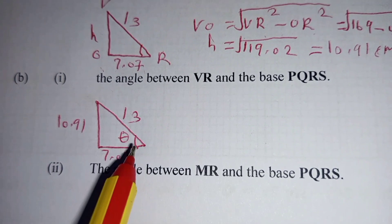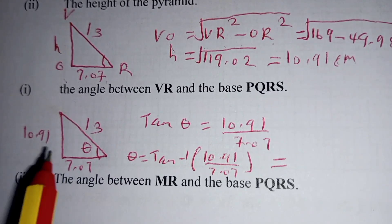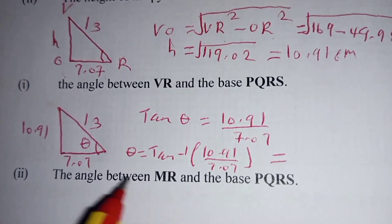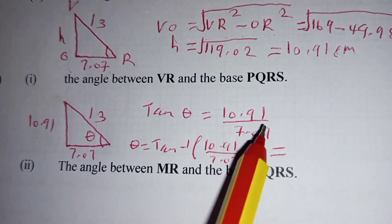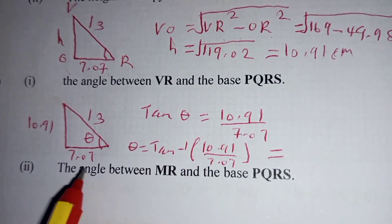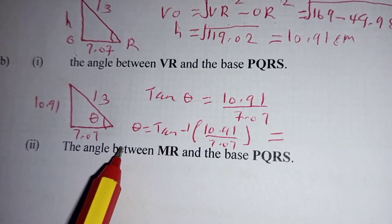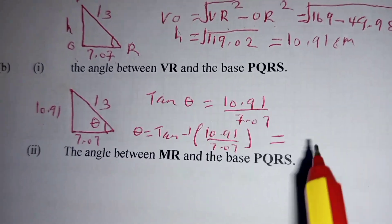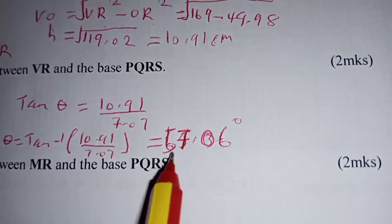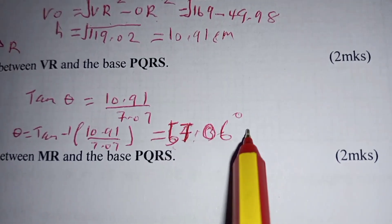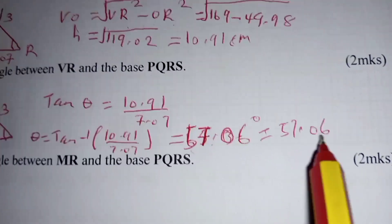We can use any trigonometric ratio to obtain our angle. Using tan, tan θ equals the opposite, which is 10.91, divided by the adjacent, which is 7.07. To two decimal places, the angle equals 57.06 degrees.